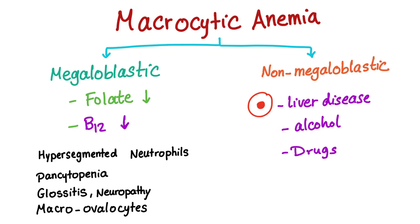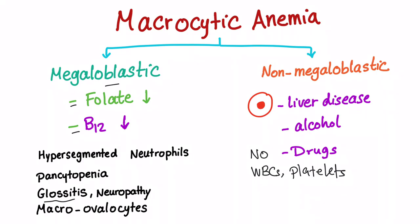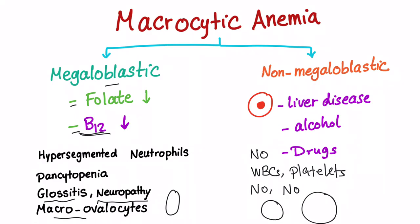What's the difference? Megaloblastic is a process with hypersegmented neutrophils, pancytopenia, and maybe even indirect hyperbilirubinemia. Non-megaloblastic has no hypersegmented neutrophils, no pancytopenia — white blood cells and platelets have normal numbers. Also remember that megaloblastic can have glossitis in both folate and B12, and neuropathy is exclusively B12. In non-megaloblastic, no glossitis and no neuropathy. In megaloblastic, the cells are big and oval; in non-megaloblastic, they are rounded but big.